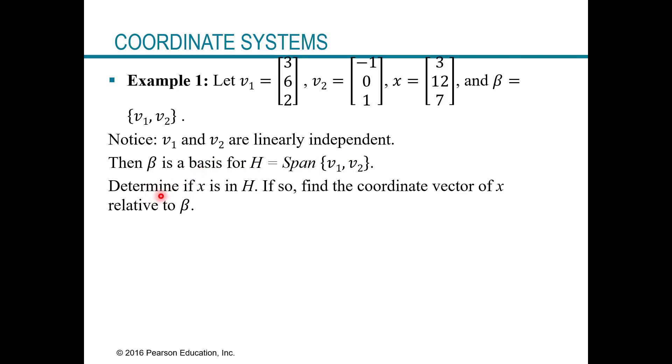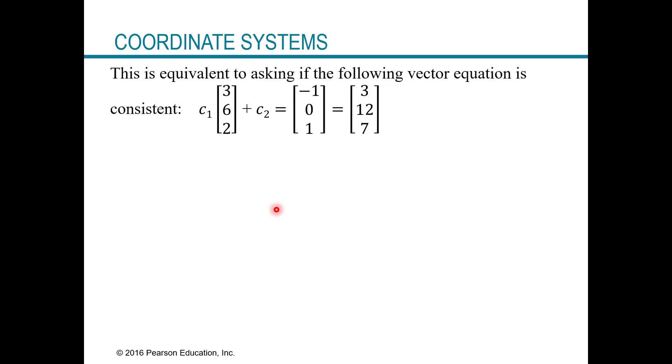Okay, so then we want to know, is x in H, and if it is, find the coordinate vector of x relative to that basis. Let's begin our solution. First, we need to figure out is x even in H at all. So x is in H if it's a linear combination of the vectors that span or generate H. So visually or mathematically, you could just say x equals a linear combination of the two vectors in this basis B. So what that is the same is, does this equation here have an answer? Is this consistent?